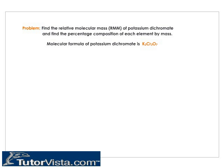The molecular formula of potassium dichromate is K2Cr2O7. The atomic masses are: potassium equals 39.1, chromium equals 52, and oxygen equals 16.